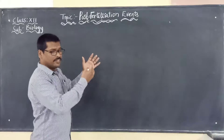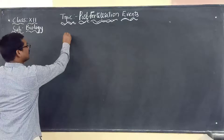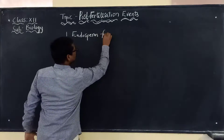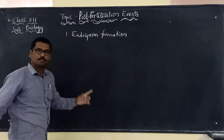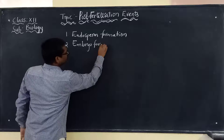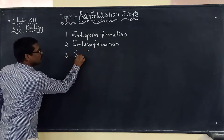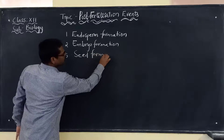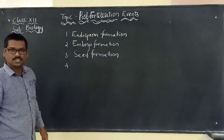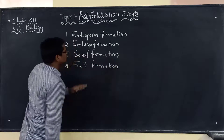There are various events taking place under post-fertilization events. The first event is endosperm formation. The second is embryo formation. The third is seed formation. And the fourth is fruit formation. These are all the events that will be called as the post-fertilization events.